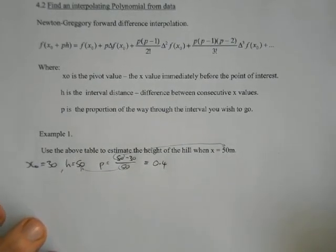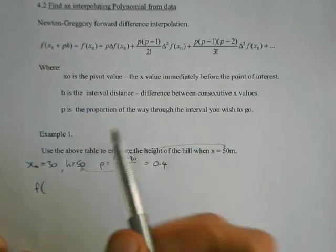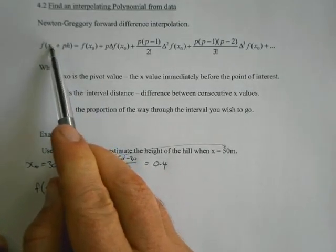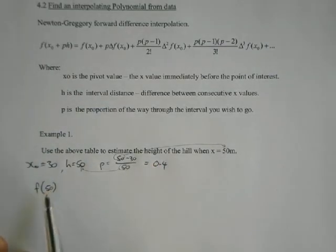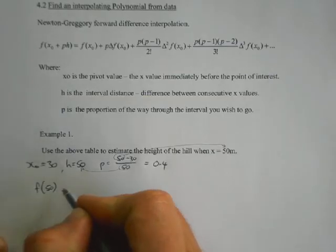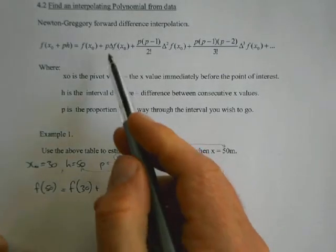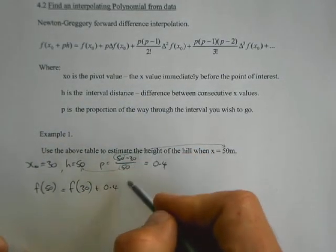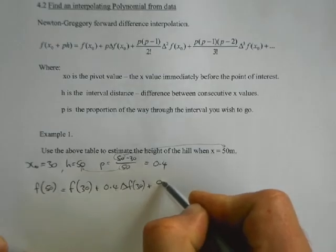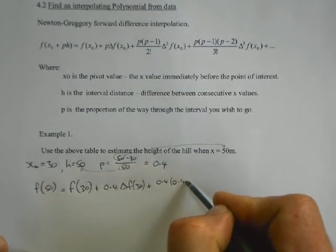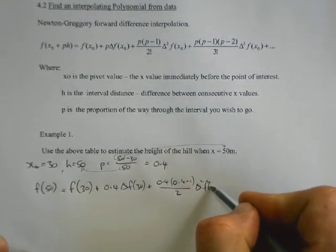And now we can stick those into this polynomial up here. So this tells us that the value of the function at our point we're trying to find, which is 50, because that's x0 is 30 plus 0.4 of 50, 0.4 of 50 is another 20, so that's the value at the point 50, which is what we're trying to find, is f of x0, well x0 is 30, plus p times the first difference based on 30, plus p times p minus 1 over 2, based on the second difference, etc.